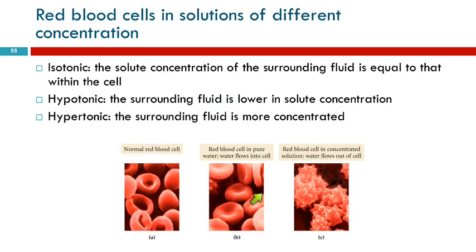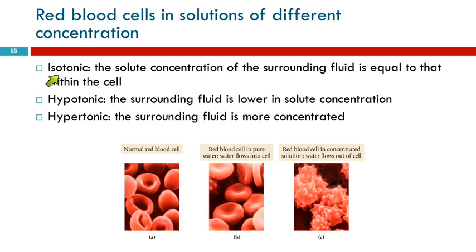We can see this with red blood cells. Red blood cells are supposed to look like this — they're circular with a divot in the middle, a little more donut-shaped. There are dissolved solutes in the fluid inside the red blood cell, and outside the red blood cell in the plasma of your blood there are also dissolved solutes. The concentration inside the blood cell and outside is the same — we call that isotonic, iso meaning the same. When the concentration inside and outside is equal, nothing bad happens to the red blood cells.